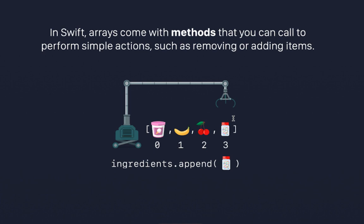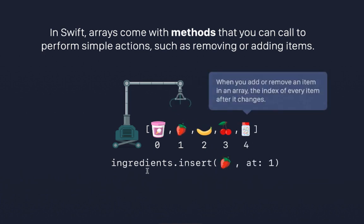Now the question comes: what if I want to insert something in the middle? The command for that is called insert. You must always say the array name dot insert, and here we give two parameters: the first parameter is what you want to insert, and the second parameter is where you want to insert it. So I am saying insert strawberry at index value 1, and the strawberry gets inserted there.